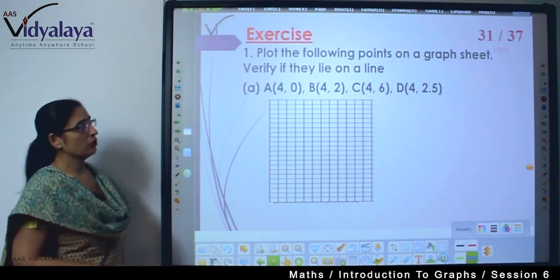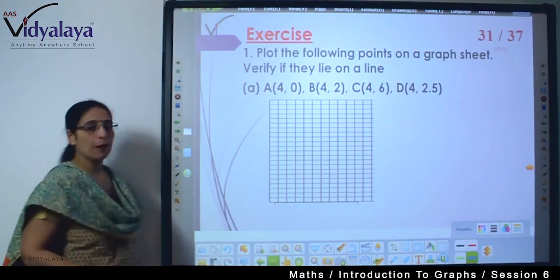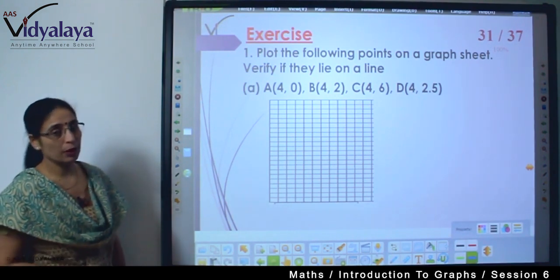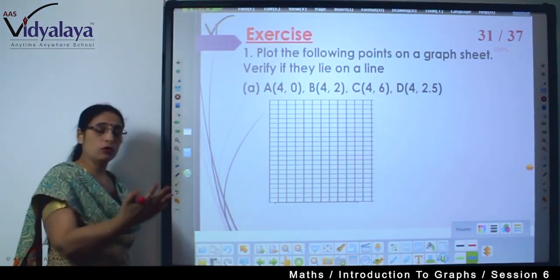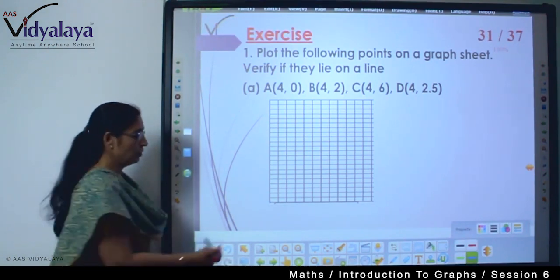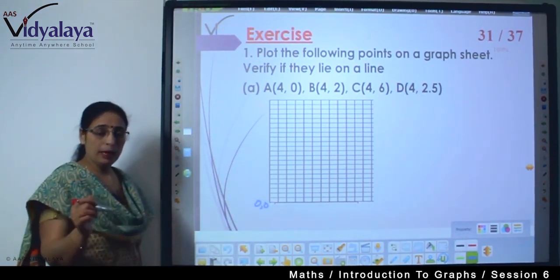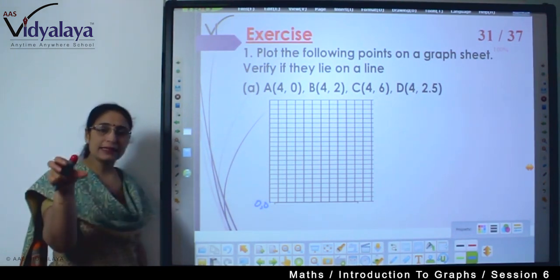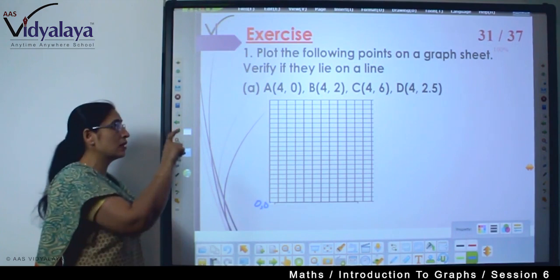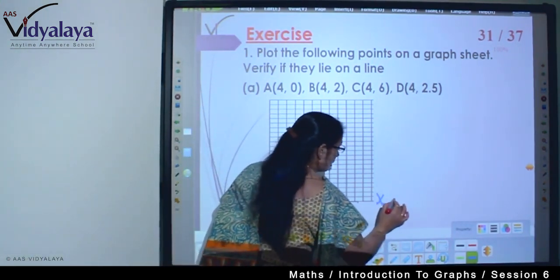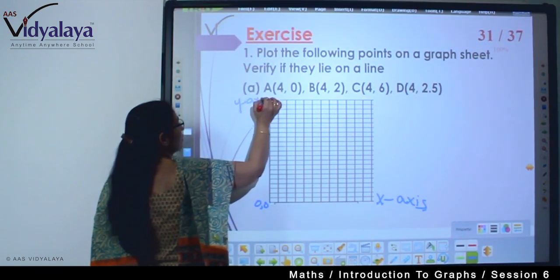Plot the following points on a graph sheet and verify if they lie on a line. You will get a graph paper like this. The origin point is zero zero, which means where our x-axis and y-axis join. This is the starting of x-axis and this is the starting of y-axis. The horizontal line is the x-axis and the vertical line is the y-axis.